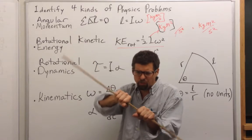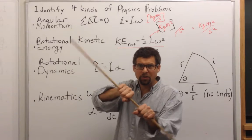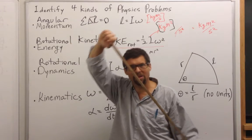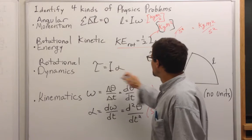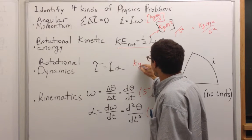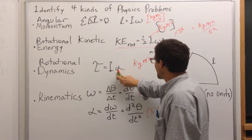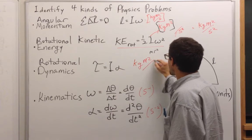If I wanted to turn this really hard, I wouldn't grab it like this. I'd grab it like this. So what are the units going to be? This is kilogram meter squared and alpha is per second squared.